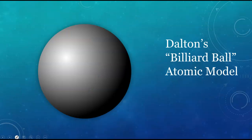John Dalton wasn't the first person to wonder about the smallest bits of matter, but his proposal was one of the first atomic models based on experimentation. Dalton believed that matter consisted of solid spherical atoms. He suggested that each element was made up of atoms that were identical to each other, but distinguishable from atoms of different elements. He thought atoms could not be broken down into any smaller particles and that atoms of one element could never be transmuted into a different element.